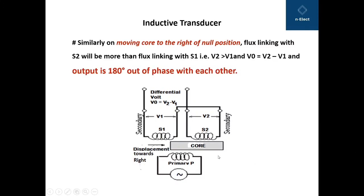In the second case, when the core is moved to the right, more flux now links from primary P to secondary S2 compared to S1. Therefore V2 is greater than V1, and the differential output voltage V0 equals V2 minus V1. In this case, the differential output voltage is 180 degrees out of phase with the primary winding voltage.